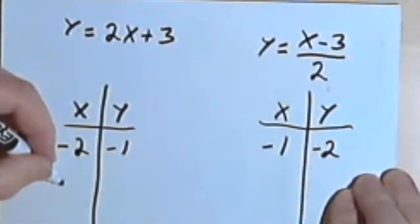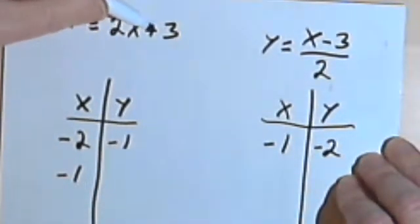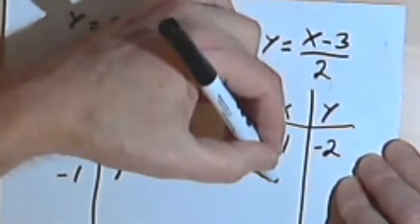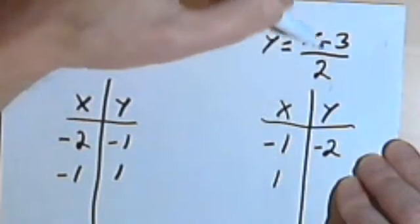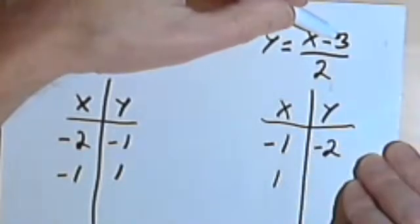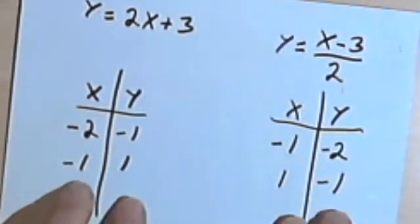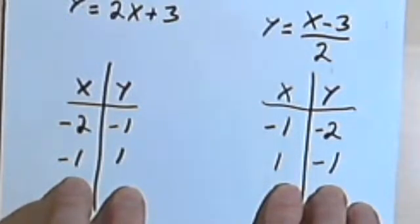Let's try another one. When x is negative 1 in the original function: 2 times negative 1 is negative 2, and negative 2 plus 3 is positive 1. Now when x is 1 in the inverse function: 1 minus 3 is negative 2, and negative 2 divided by 2 is negative 1. Once again, I've swapped my x and y columns. This makes sense since an inverse function is what happens when we swap the x's and the y's.